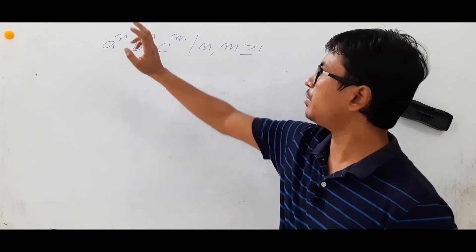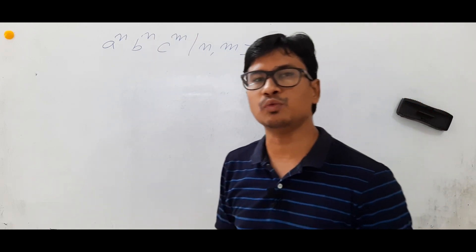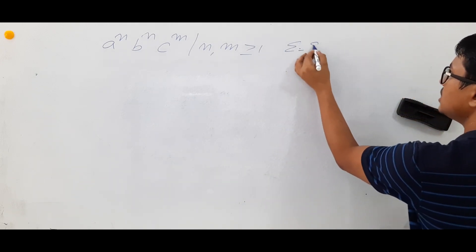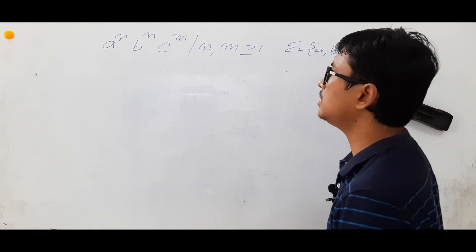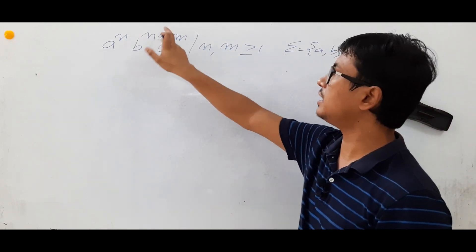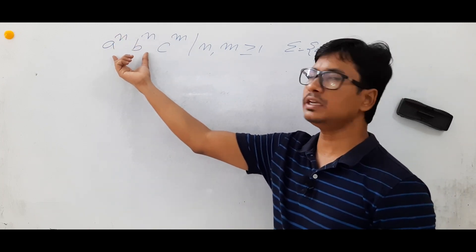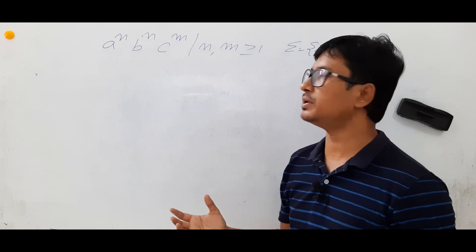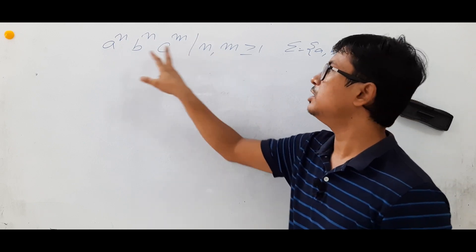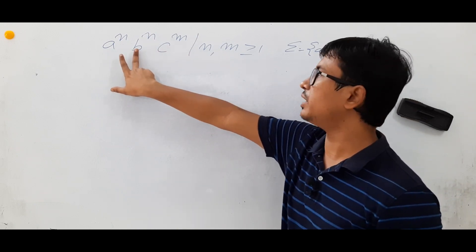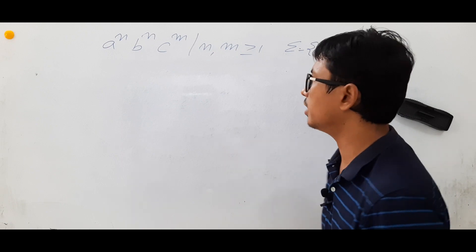The question is: a^n b^n c^m where n and m are greater than or equal to 1. The alphabets of this language are a, b, c. The strings are in the form a^n b^n c^m. The meaning of a^n b^n is that the number of a's should be equal to the number of b's, and there is no relation between n and m — it only cares that the count of a's equals the count of b's.